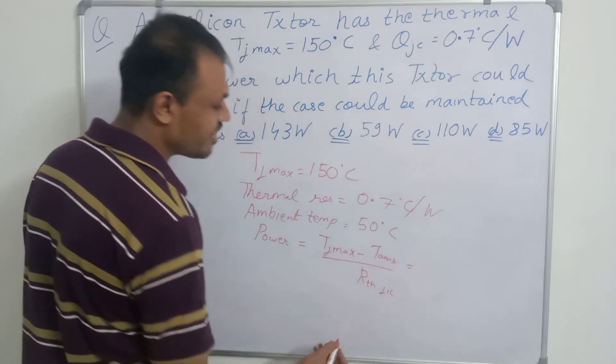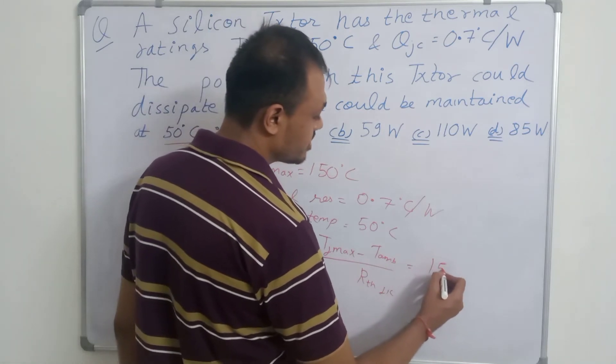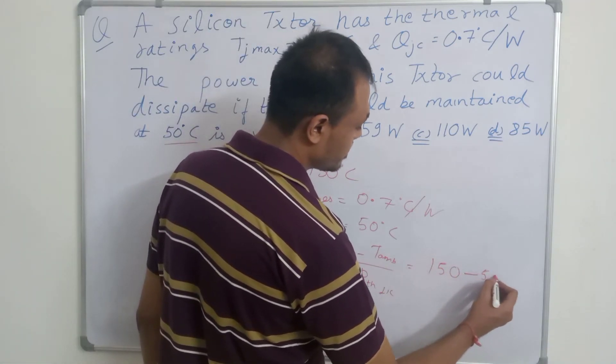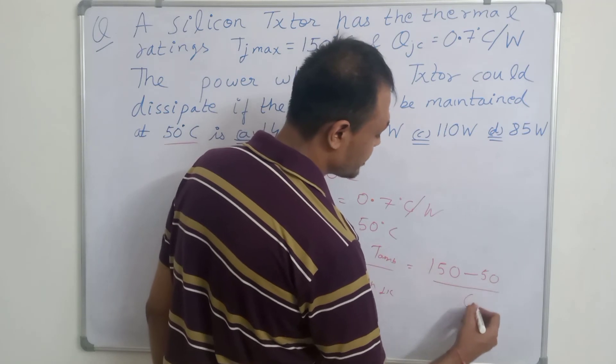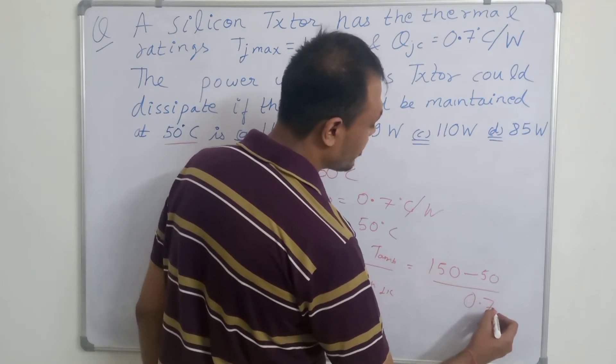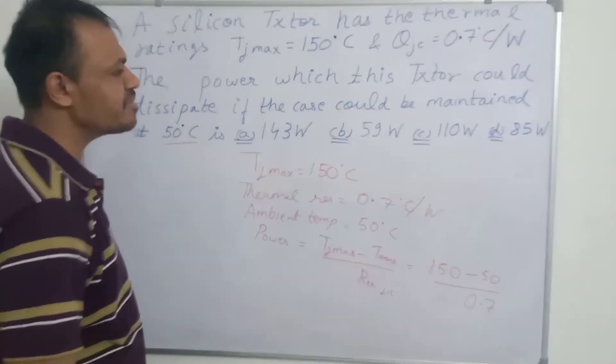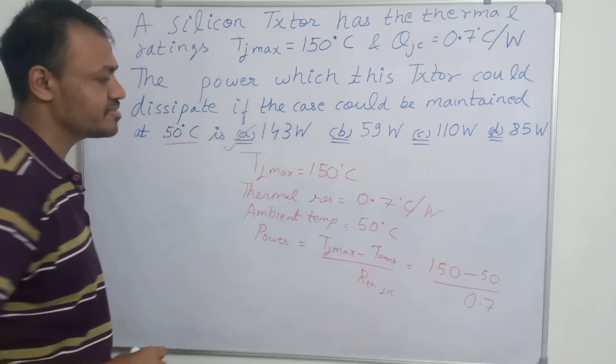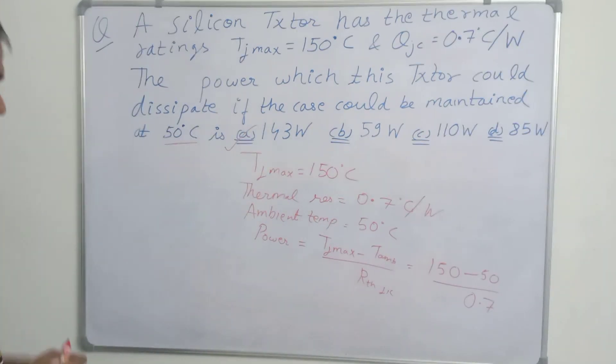This is equal to 150 minus 50 upon 0.7 or 100 upon 0.7. So, it is approximately equal to 143 watt. The correct answer is 143 watt.